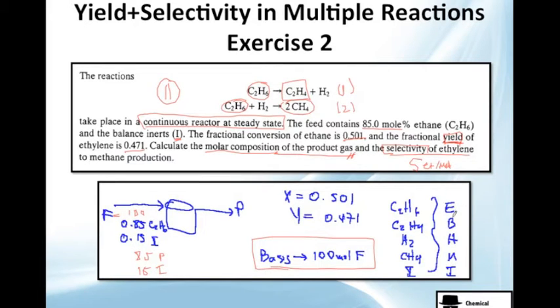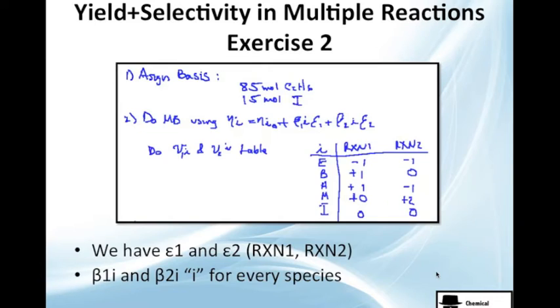It's obvious. We just multiply 85 mol of C2H6 and 15 mol of inert material. And I'm using this because I'm used to use letters. So, ethane, I'm going to use E. Ethylene I will be using B. Methane, I will be using M. And inert, stay as inert. Good. With the basis, we know this.